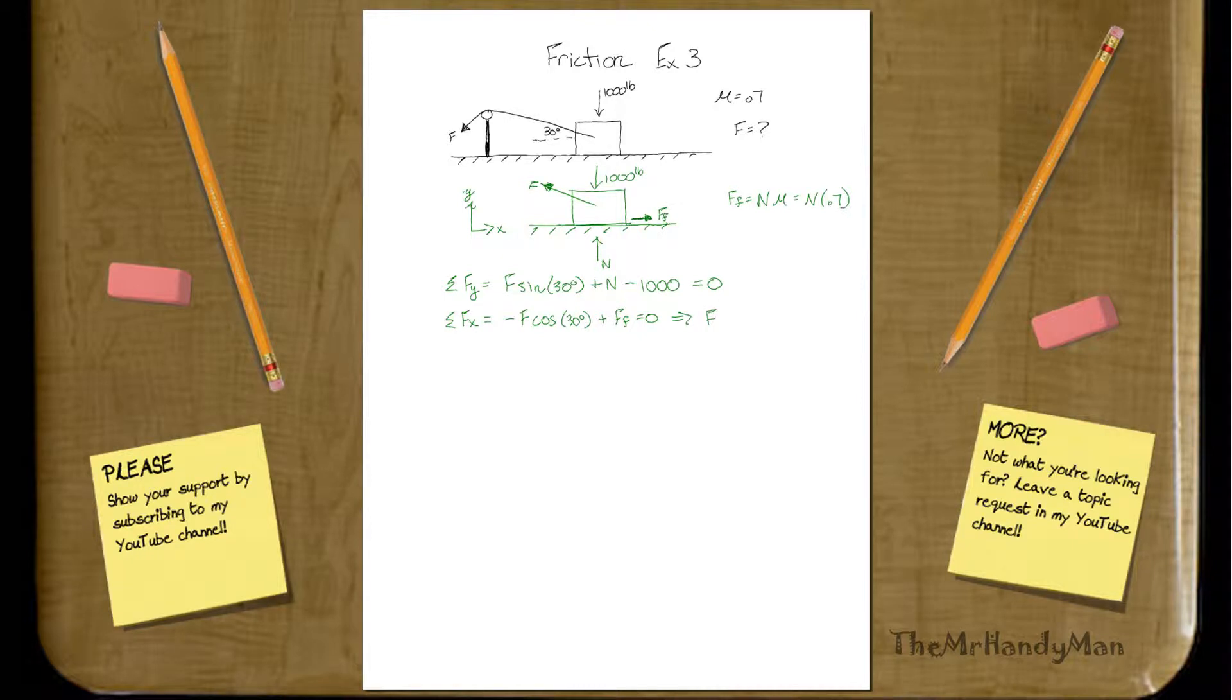So, one thing that we could say with this is that f cosine of 30 degrees will equal the force of friction.